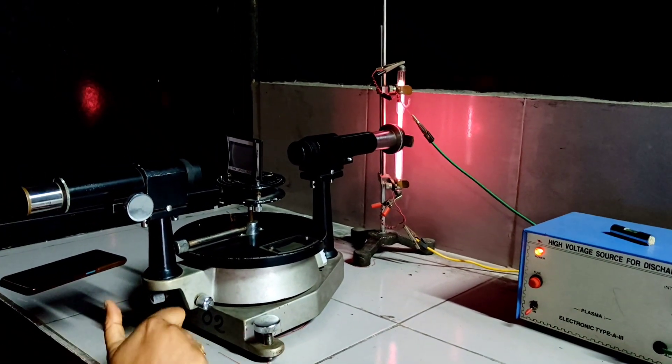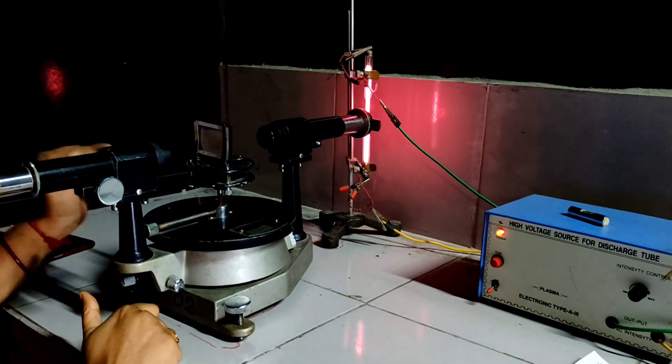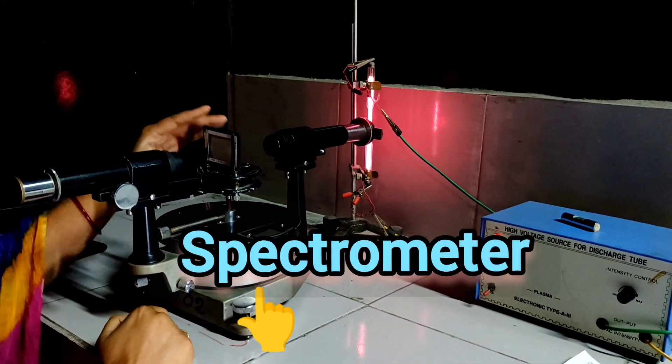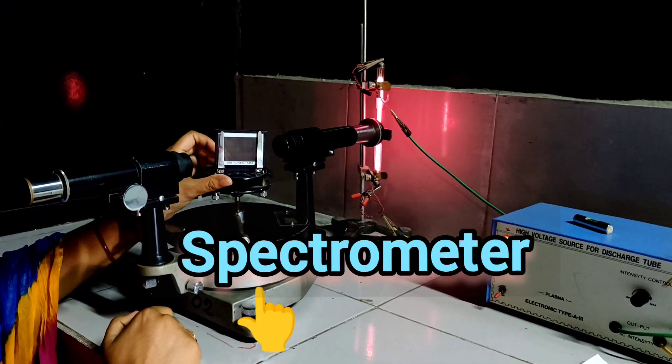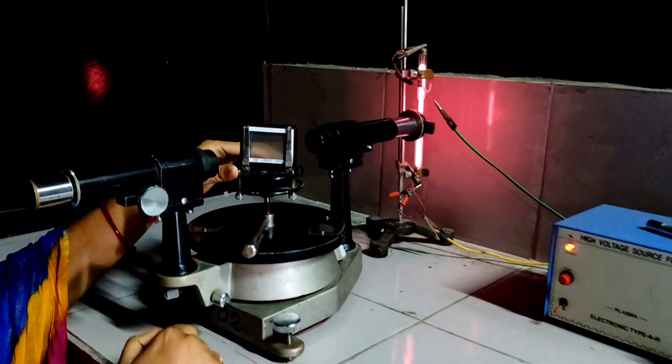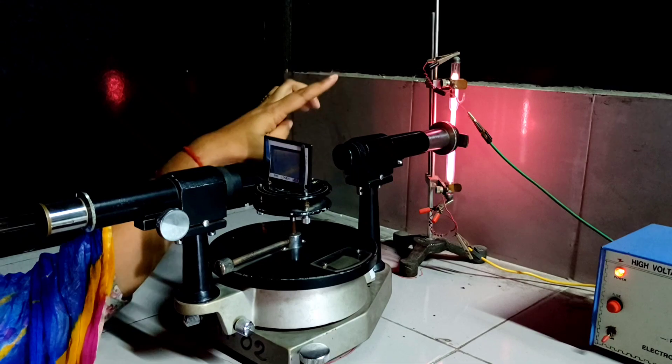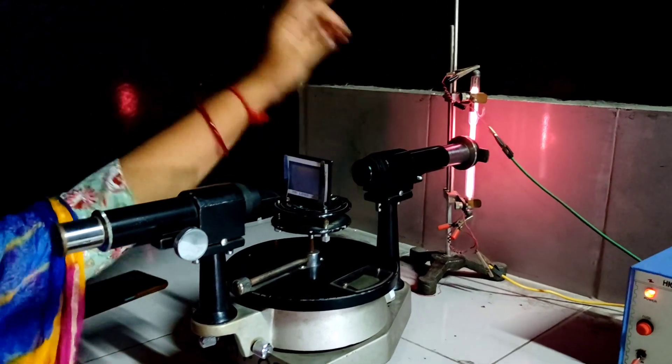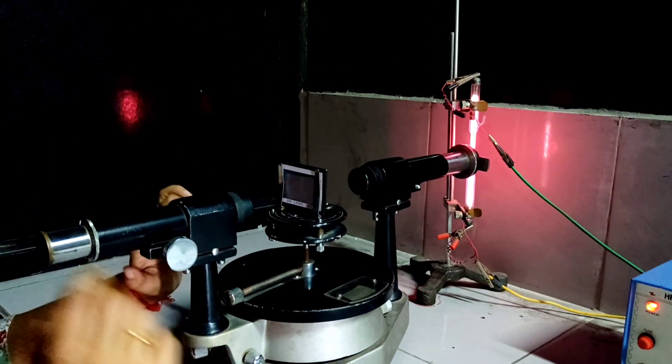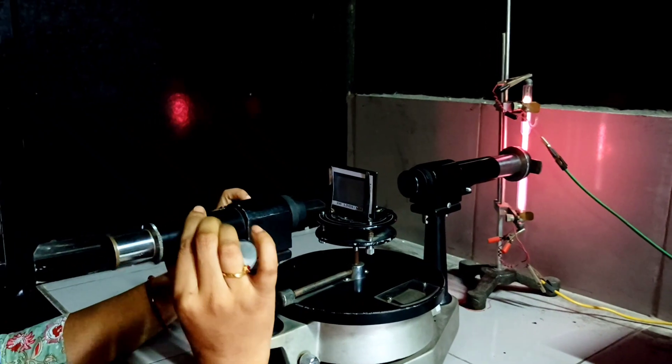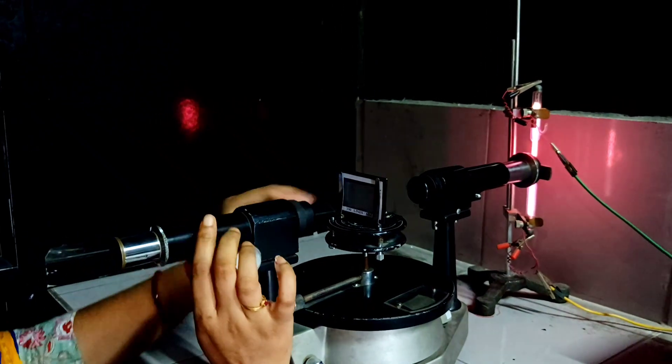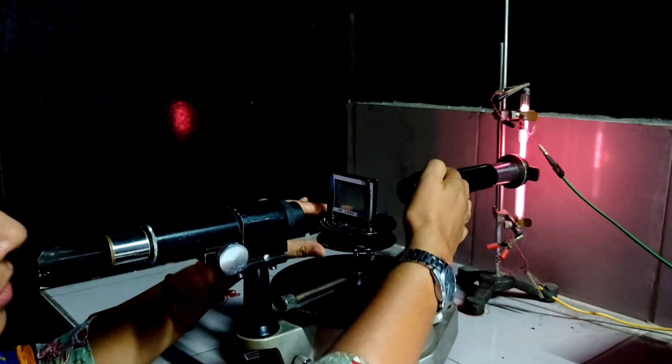Now this setup is called spectrometer and in the middle the diffraction grating has been placed. So spectrometer has three parts. The first one is collimator. Collimator will face the light and this part called telescope. This part will face our eyes.